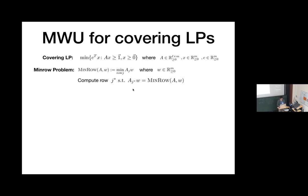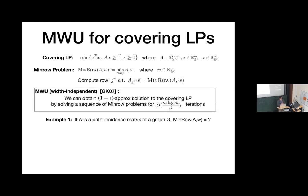The multiplicative weights update framework tells you that you can obtain a 1-plus-epsilon approximation to the covering LP by solving the min-row problem for M log N over epsilon-squared iterations. For example, if A is the path-edge incidence matrix of a graph G, then the min-row problem corresponds to the shortest path problem.